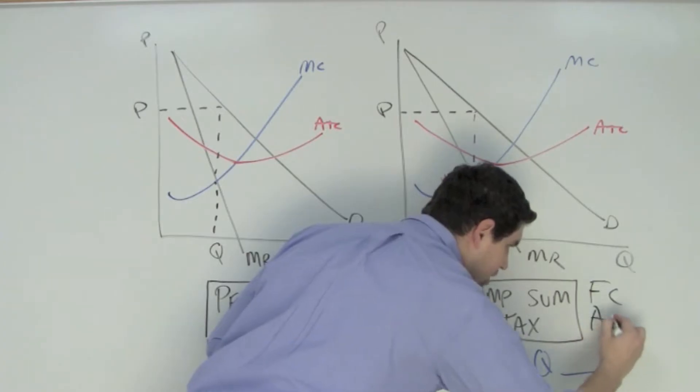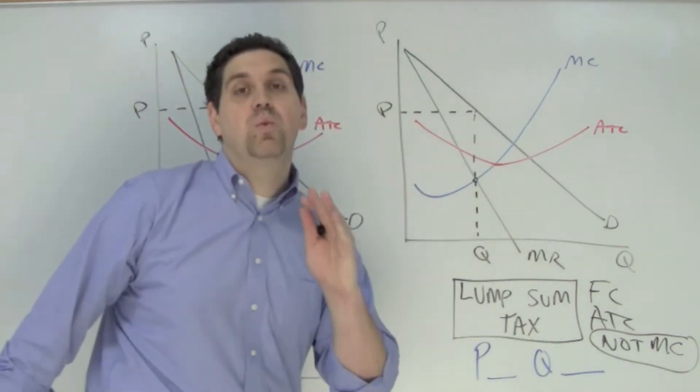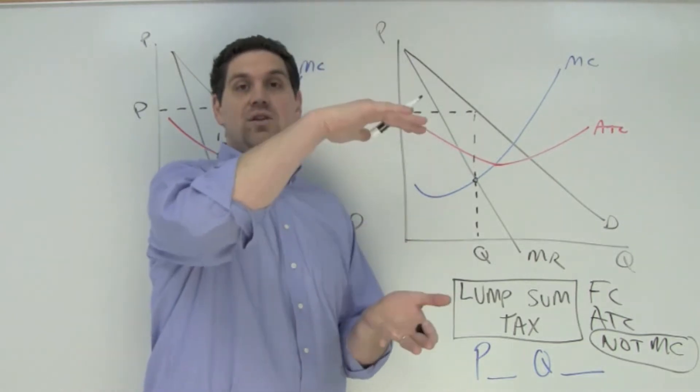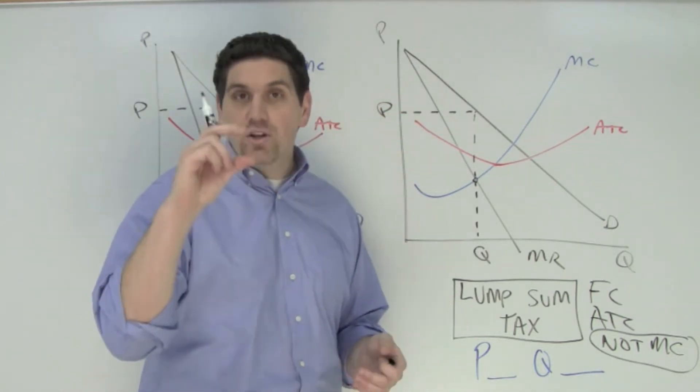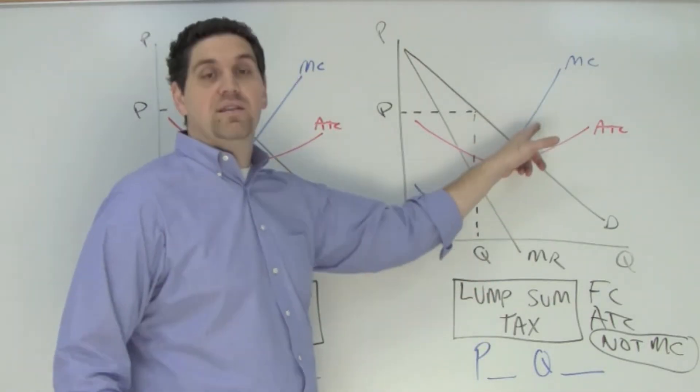So the average total cost is going to change but not marginal cost. This is super important. The marginal cost will not change. Why? Because marginal cost is the change in total cost and since total cost goes up for each unit, the difference between each unit doesn't change. The point is, marginal cost doesn't change.